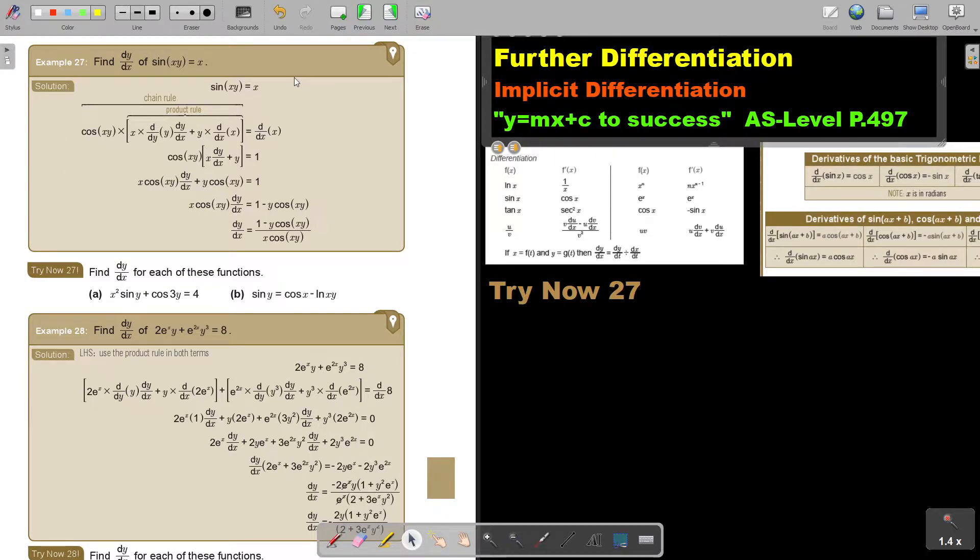You will find this on page 497 in the Namibia A-level mathematics textbook 'Y equals MX plus C to success.' Let's look at another example, and now I'm bringing trigonometry in. Find dy over dx of sin(XY) equals X. I was taking the formula sheet where if I differentiate sin, it's going to be cos(X). But remember, we are going to do the chain rule as well as the product rule.